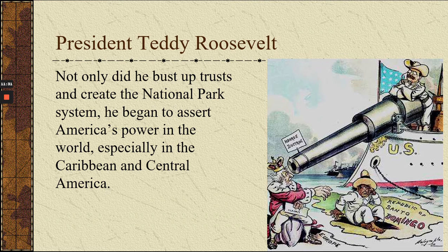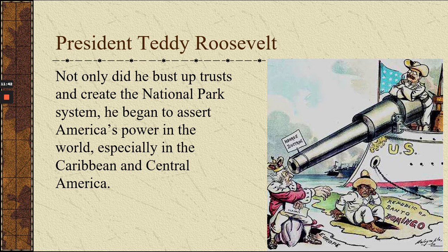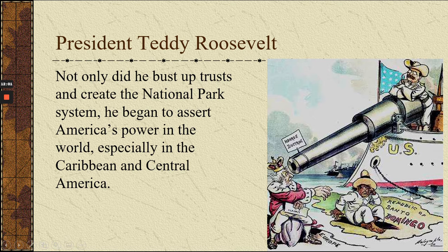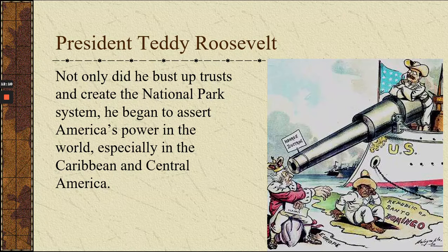Teddy Roosevelt — not only did he bust up trusts and create a national park system, he began to assert America's power in the world, especially in the Caribbean and Central America. You've got Teddy Roosevelt pointing a gun at Europe, and what he's saying is: Europeans, stay out of the Caribbean. If there are any problems in the Caribbean, we — the United States — will handle it. This is our turf.